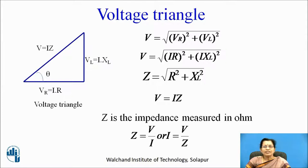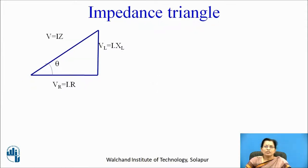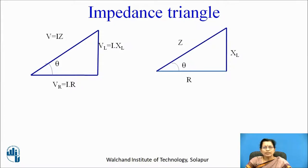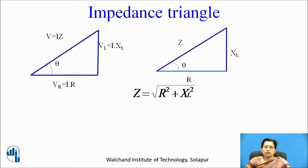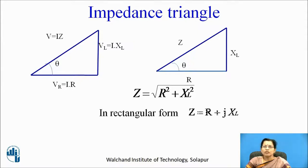Z is also calculated as V by I, and we can write I equals V by Z. We can draw the impedance triangle from the voltage triangle by simply eliminating the current from Iz, IXl, and IR, giving the impedance triangle. From the impedance triangle, Z equals under root of R squared plus Xl squared, and in rectangular form, Z equals R plus jXl.